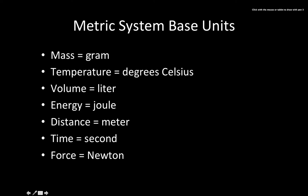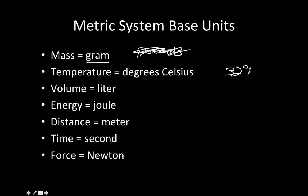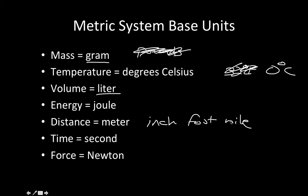In the metric system, we use a few different units than what we might normally be used to in our everyday lives. For mass, we use grams — not pounds. In temperature, we use degrees Celsius, so instead of 32 degrees Fahrenheit, freezing is zero degrees Celsius. For volume, we have liters instead of gallons or quarts. Energy is joules. Distance is meters rather than an inch, a foot, or a mile. Time is seconds, standard stuff. And force is a newton.